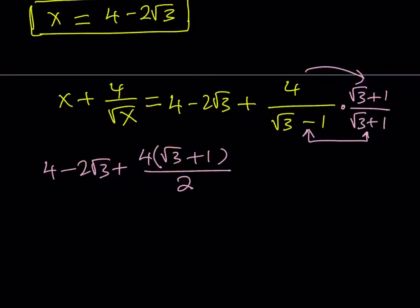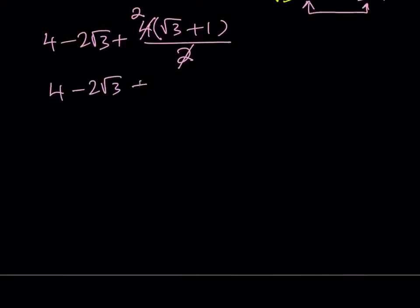So now 2 goes into 4, 2 times, so we can simplify. And now this becomes 4 minus 2 root 3 plus, now if you go ahead and distribute the 2 over here, you get 2 root 3 plus 2. And obviously the negative 2 root 3 and the positive 2 root 3 are going to cancel out, giving us 6 as the final answer.